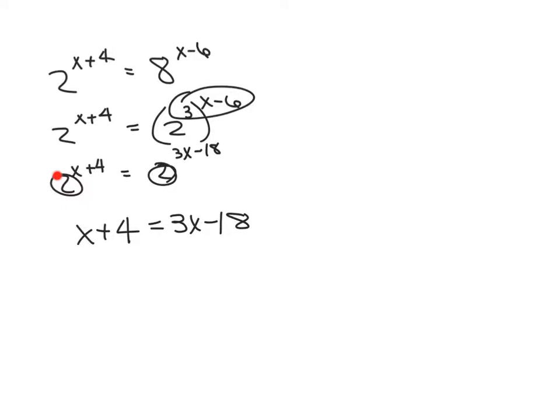Because if my bases are both 2, then whatever my exponents are, if this is equal, my exponents have to be equal. I can't say 2 to the 3rd equals 2 to the 4th. This is going to have to equal 2 to the 3rd as well, or they won't be equal. So that's why I compare my exponents. Now I just solve for x and I find out that x equals 11.